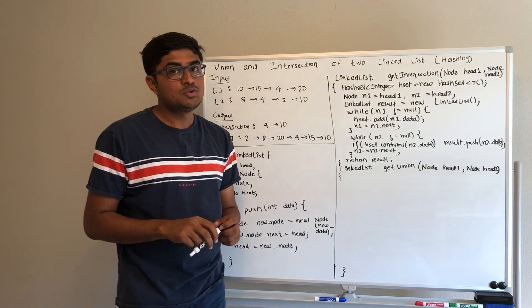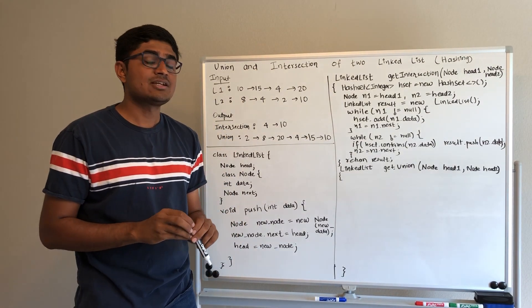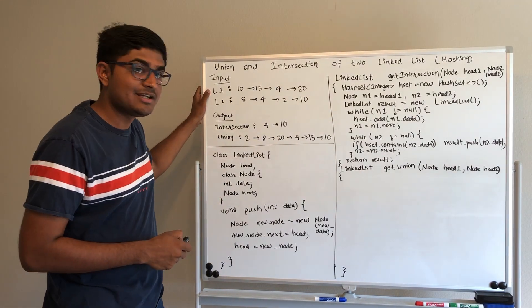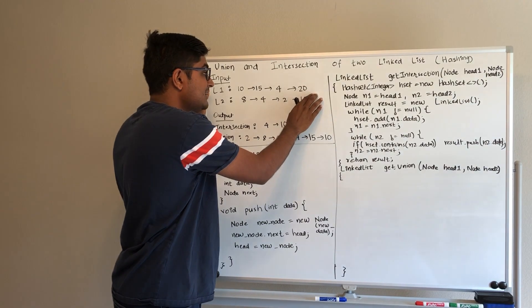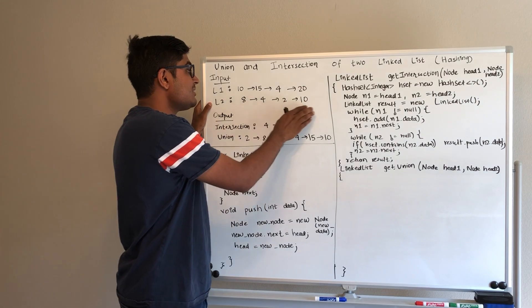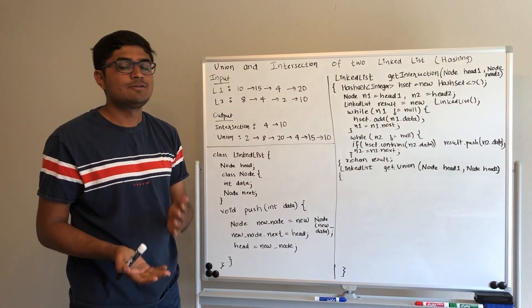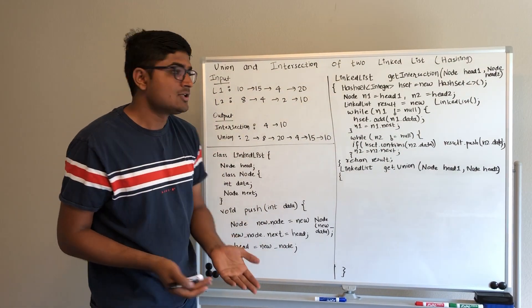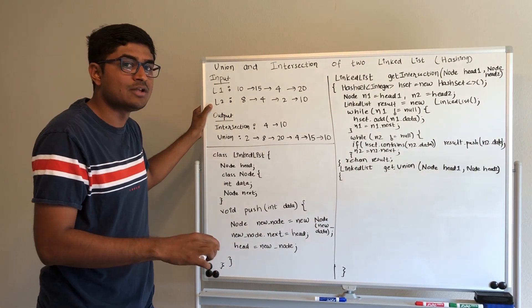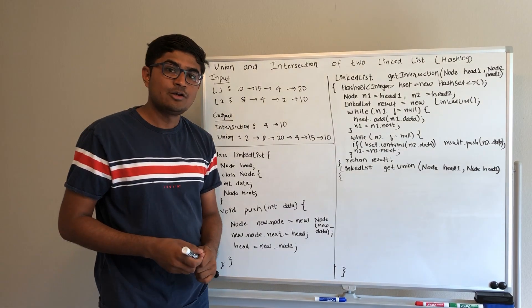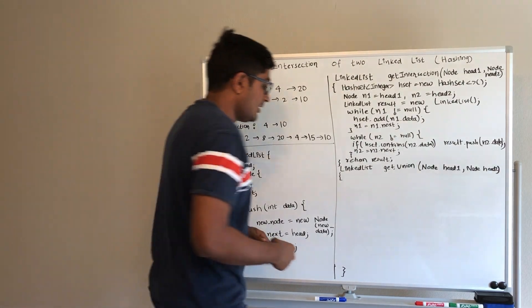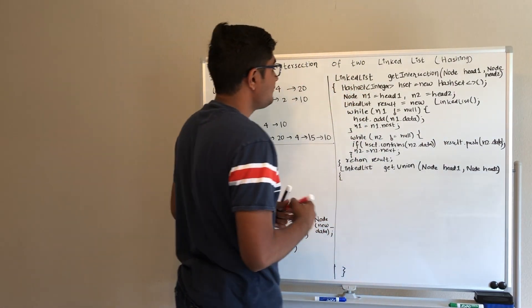For the union of two linked lists, the idea is almost the same. We create a hash set, iterate over the first linked list to add all its elements, then iterate over the second list to add all its elements as well. Since this is a hash set, it will not add any duplicate elements, so all unique elements of L2 that are not in L1 will be added. At the end, we iterate over the hash set to build the result list.